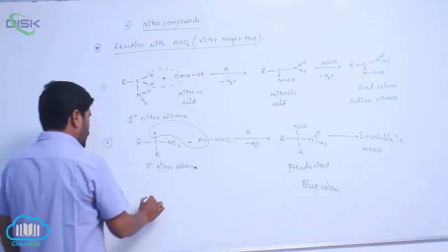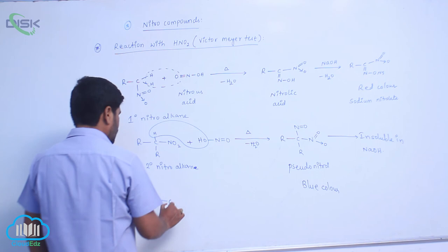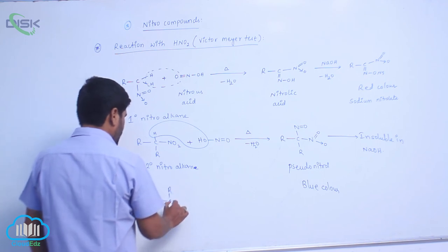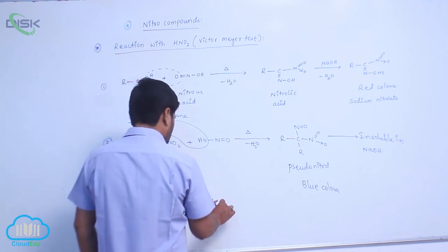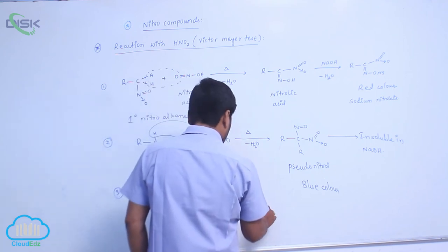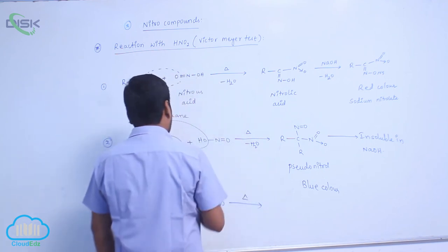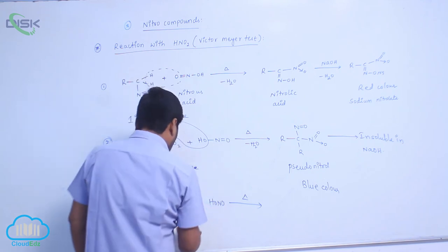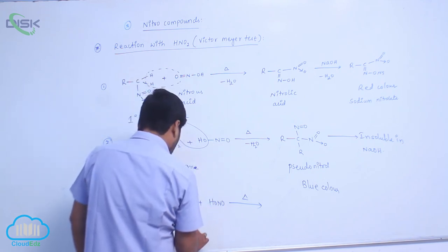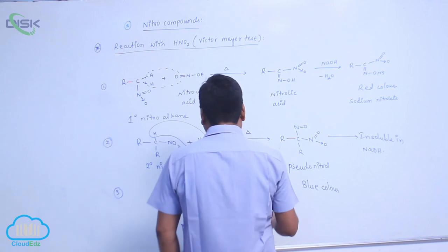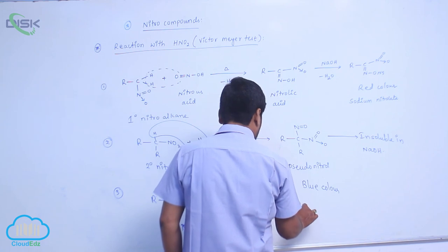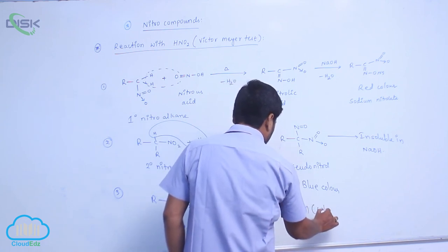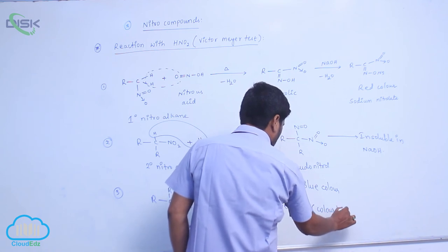For a tertiary (3°) nitroalkane, the nitro group reacts with nitrous acid but there is no acidic hydrogen on the tertiary carbon, so no reaction takes place. It is insoluble in base, giving a colorless result.